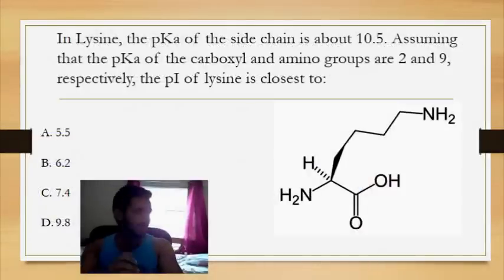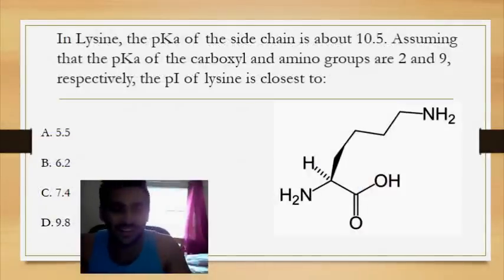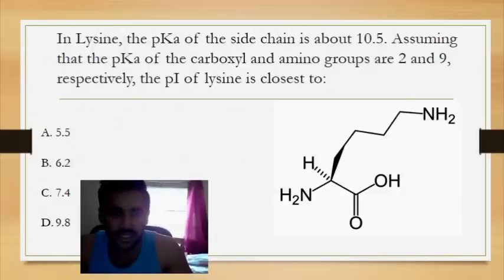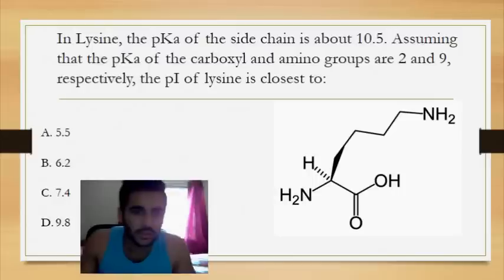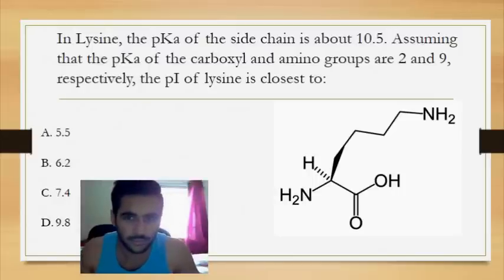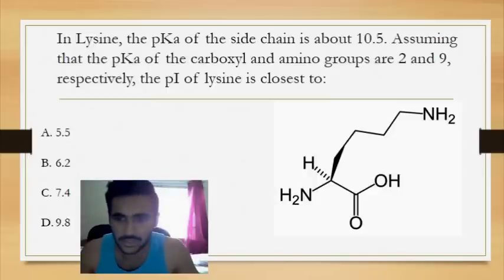Next question: in lysine, the pKa of the side chain is about 10.5. Assuming the pKa of the carboxyl and amino groups are 2 and 9 respectively, the pI of lysine is equal to which of the following? The answer choices are 5.5, 6.2, 7.4, and 9.8.